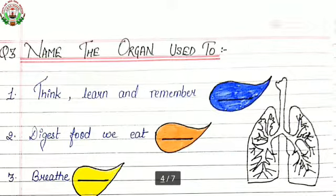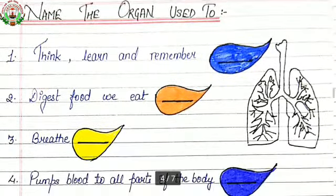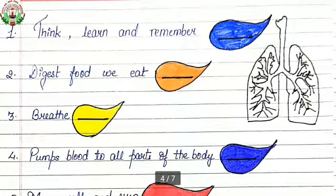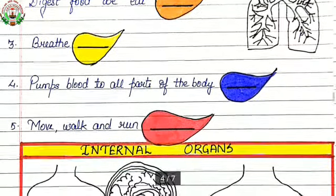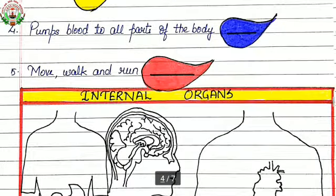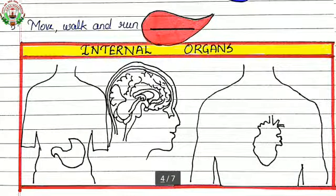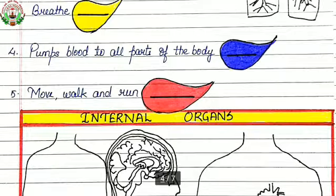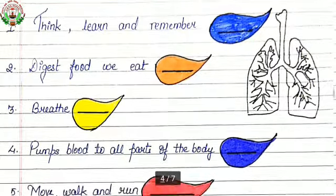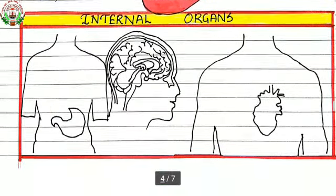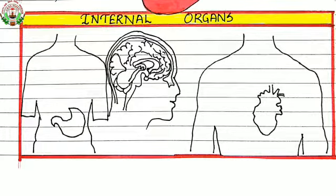Question number three, name the organ used for each function. First, which organ helps you to think, learn and remember? Second, which organ helps you digest food we eat? Third, which organ helps you breathe? Fourth, which organ pumps blood to all parts of the body? Fifth, which organ helps you move, walk and run? There are some hints in the picture: lungs, heart, brain, stomach, bones and muscles.